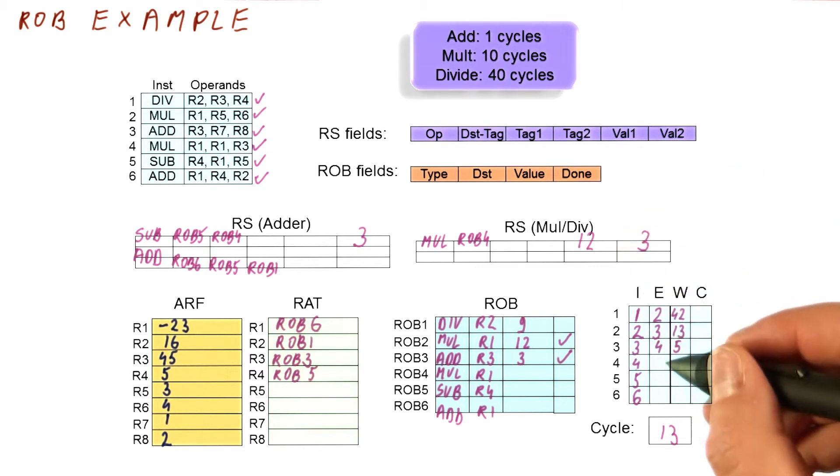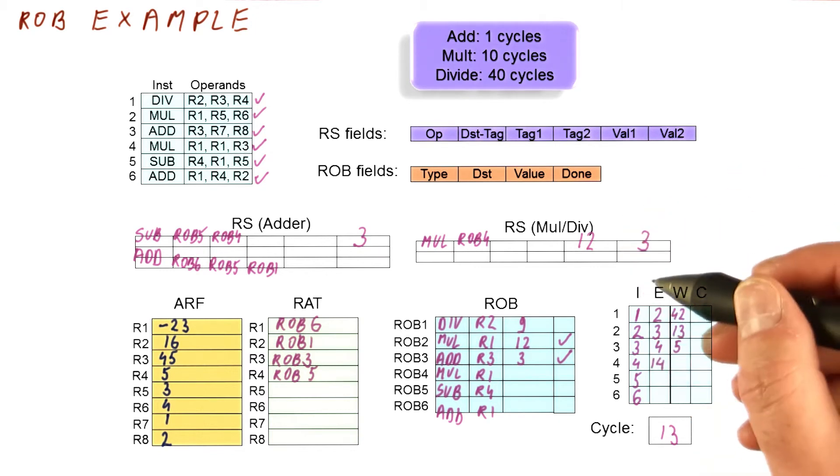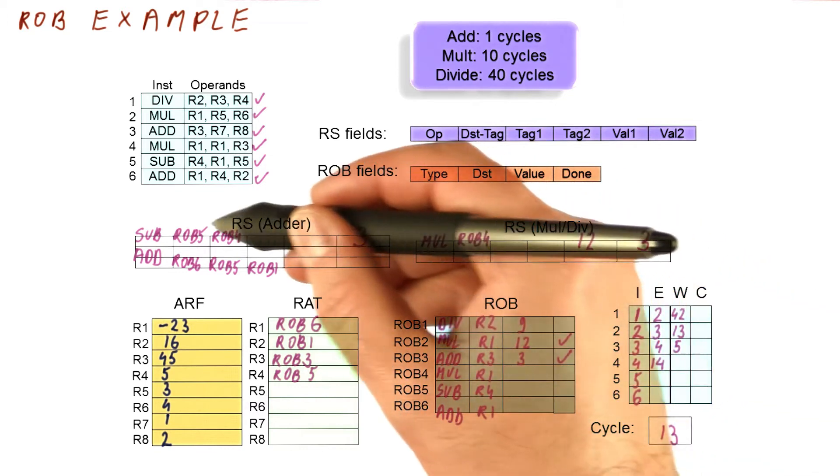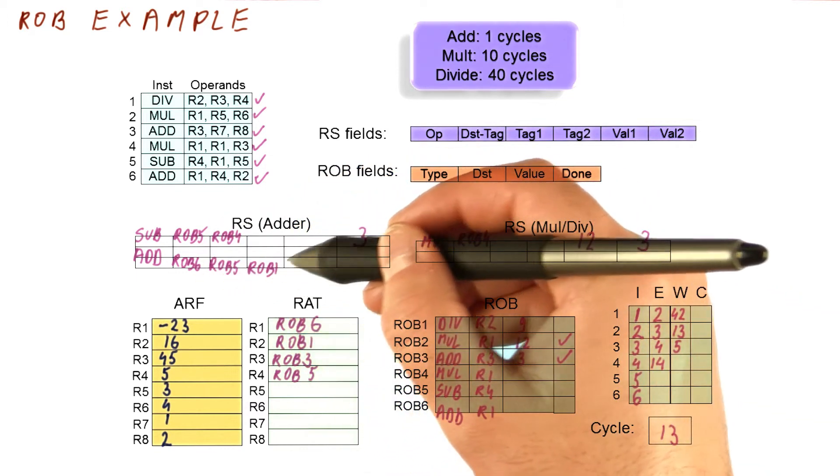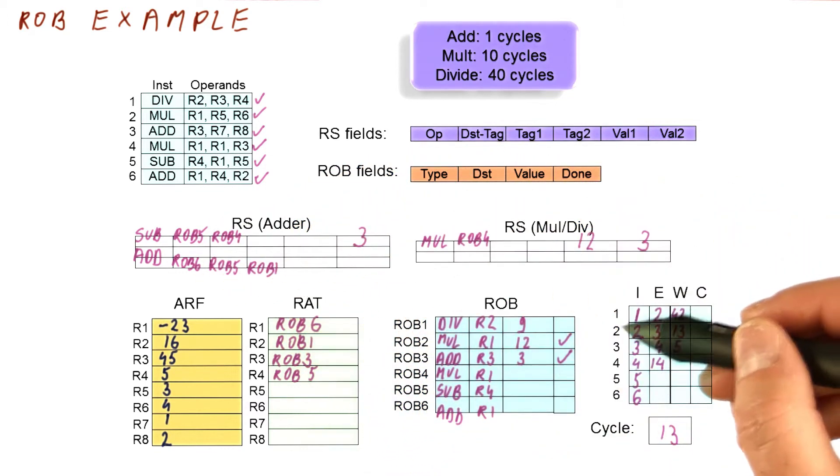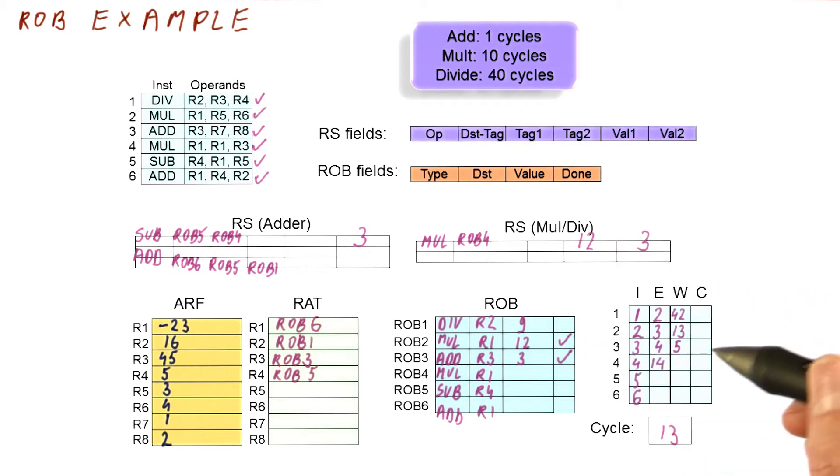And in cycle 14, the fourth instruction begins executing. None of the other instructions are waiting for rob2.